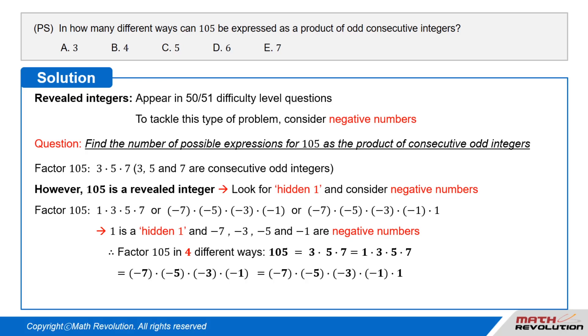105 equals 3 × 5 × 7, which equals 1 × 3 × 5 × 7, which equals negative 7 × negative 5 × negative 3 × negative 1, which equals negative 7 × negative 5 × negative 3 × negative 1 × 1.